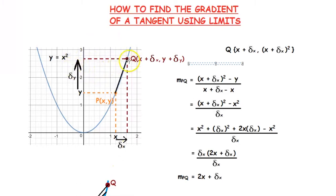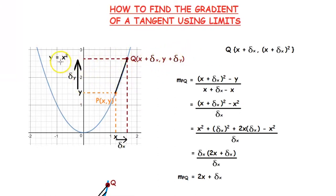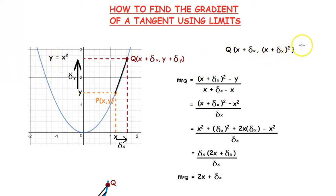So, the point Q will have the coordinates (x + delta x, y + delta y). Since this curve is y equals x squared, we can write the coordinates of Q as (x + delta x, (x + delta x)²).